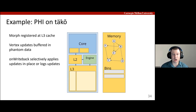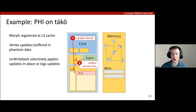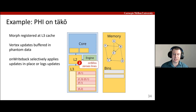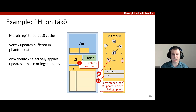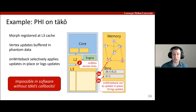PHY is very easy to implement with TACO's callbacks. An application starts by registering a morph at the L3 cache for vertex data. On a cache miss, on-miss provides a zeroed-out cache line. Subsequent updates are simply written to buffered phantom lines. When a line is evicted, on-writeback checks the content of the line to decide whether to apply the updates in place or log them for later, using the same logic as PHY. So we've now implemented push semantics in software. And importantly, this is not possible without TACO, since software cannot respond to cache insertions and evictions using only loads and stores.